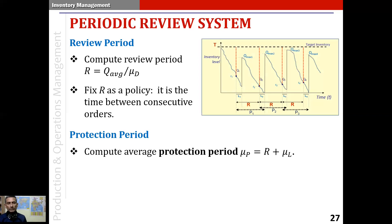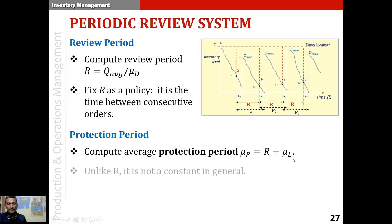From this, we compute another period known as the protection period. The protection period is important in the periodic review system because we don't monitor the inventory level closely. Sometimes, before the next review happens, there can be a stockout if we depend merely on the lead time or the review period. Hence, we add the lead time to the review period and consider that as the protection period. The average protection period is defined as the review period plus the mean lead time.